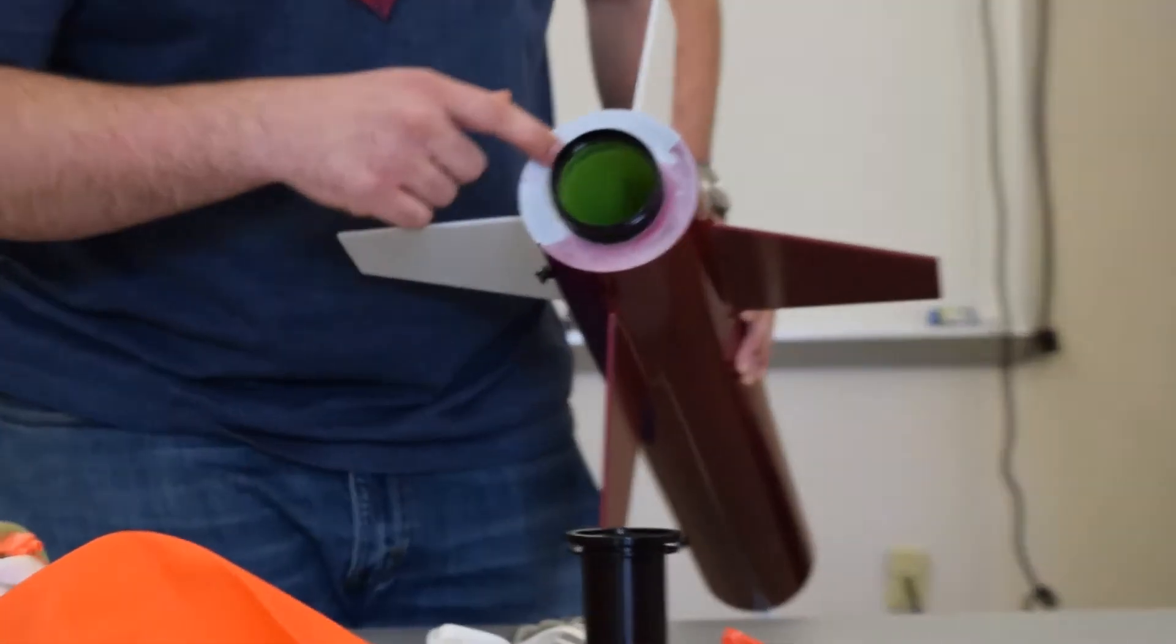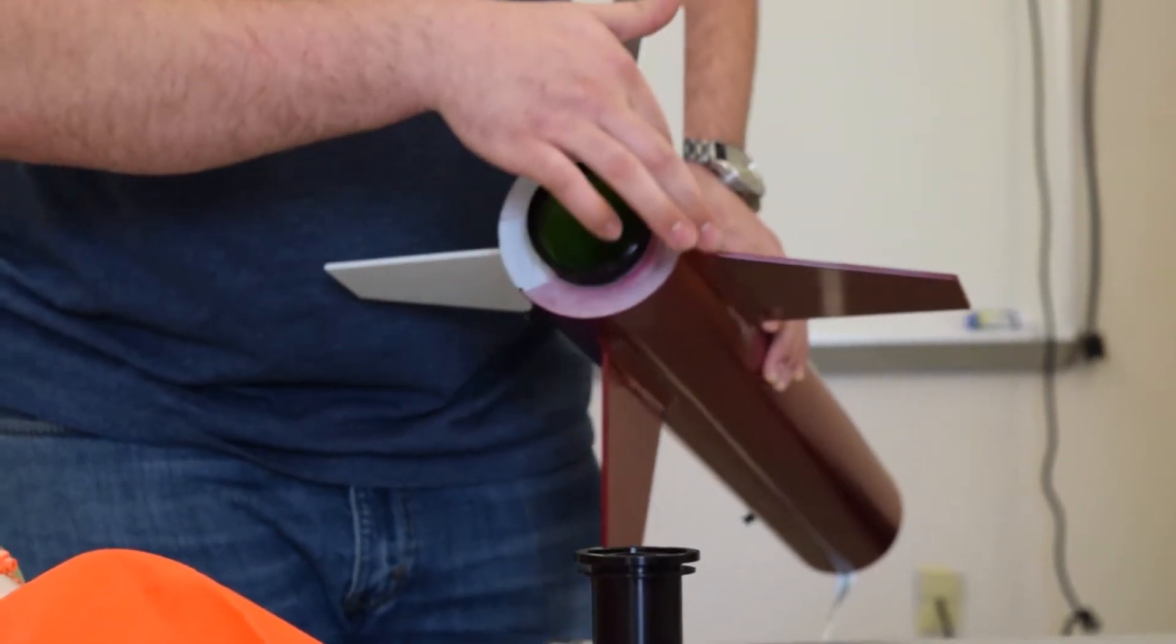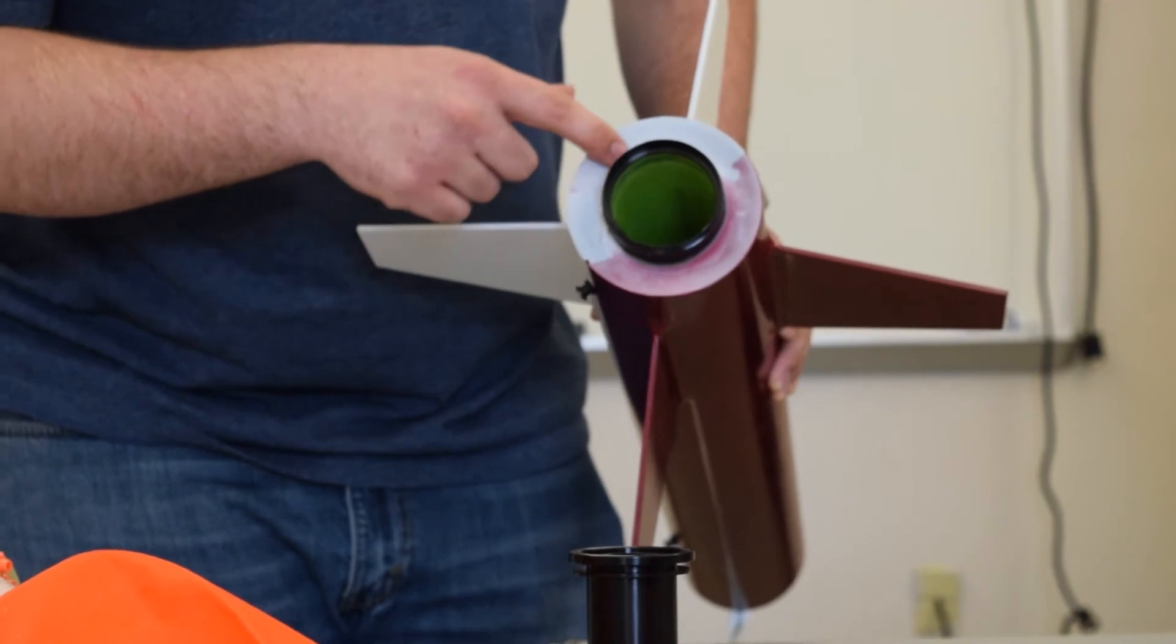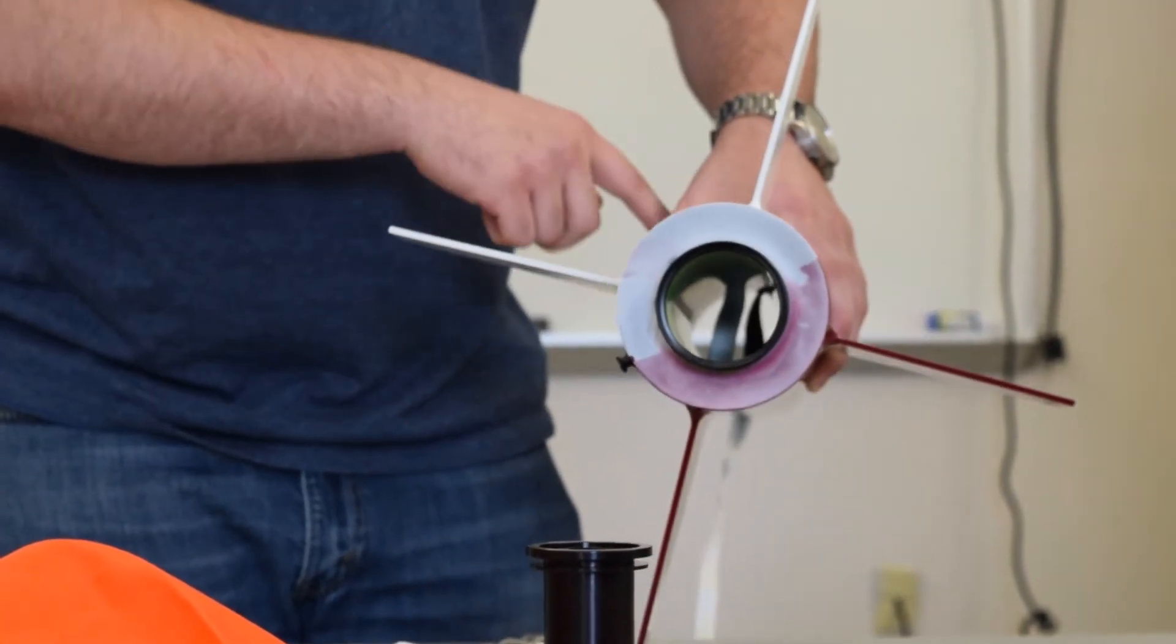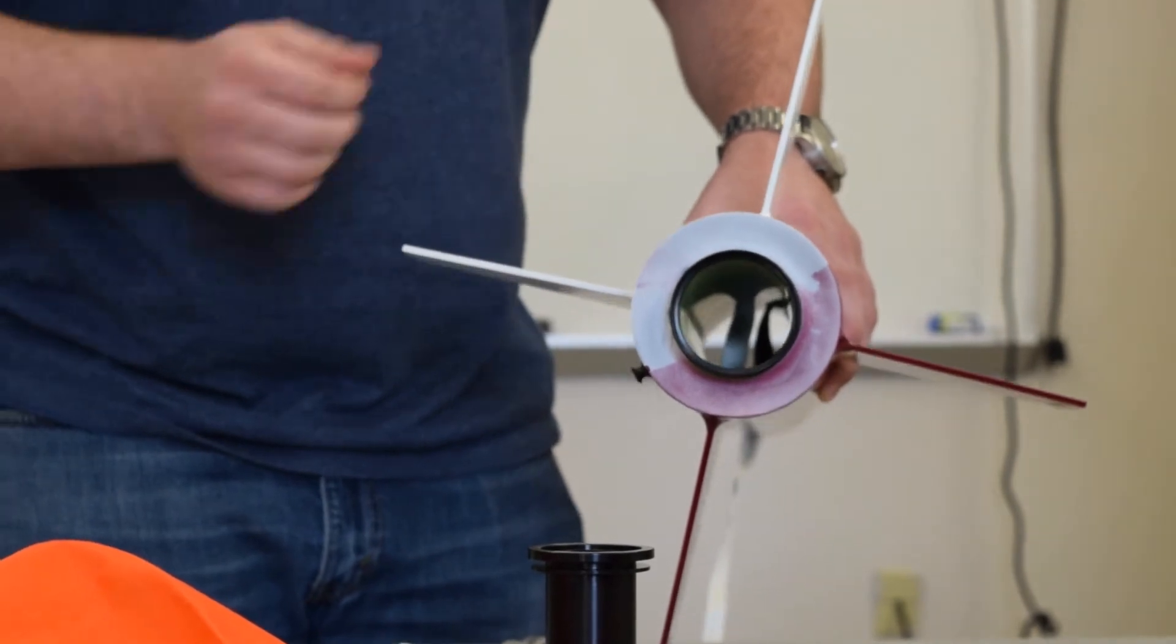And if we look down here at the bottom of the engine mount, you can see that we also use the epoxy putty to hold it in, and then of course liquid epoxy on the rings on the inside.